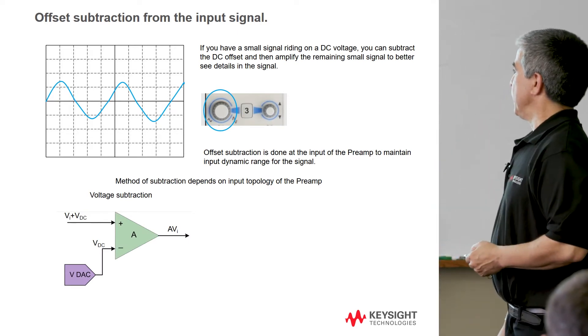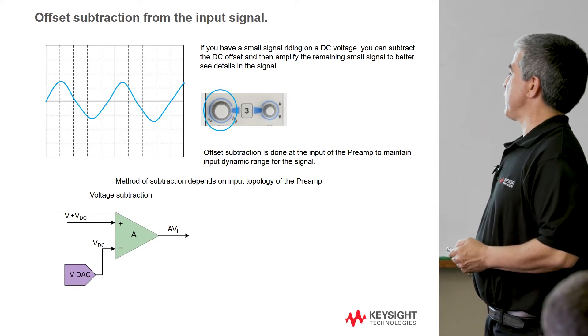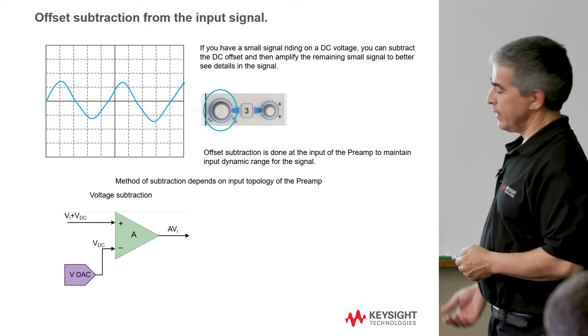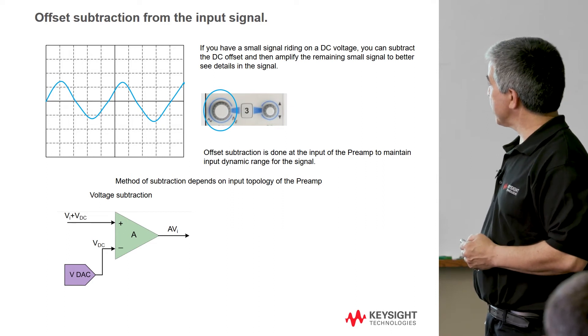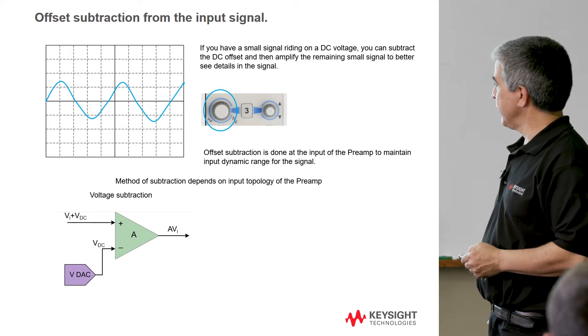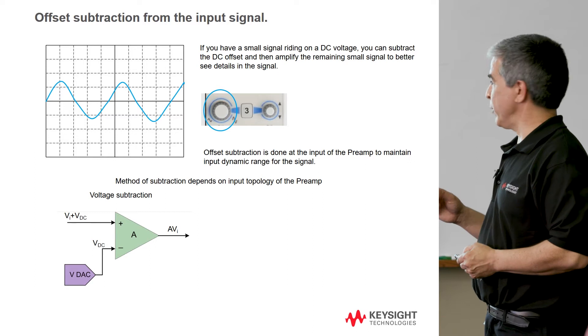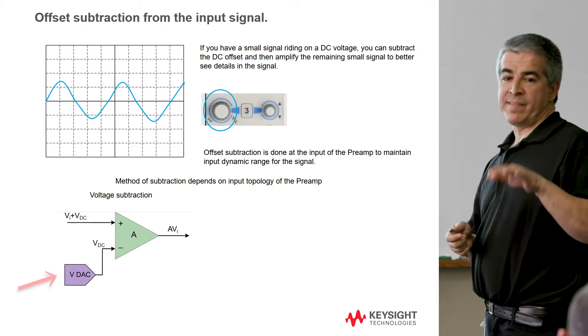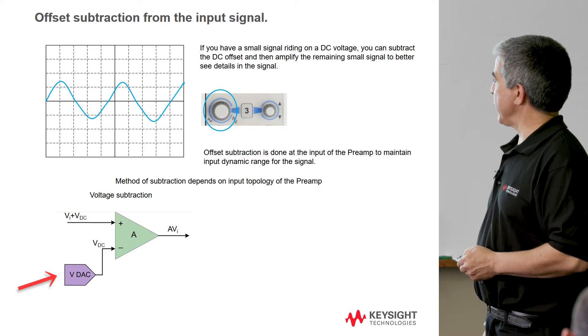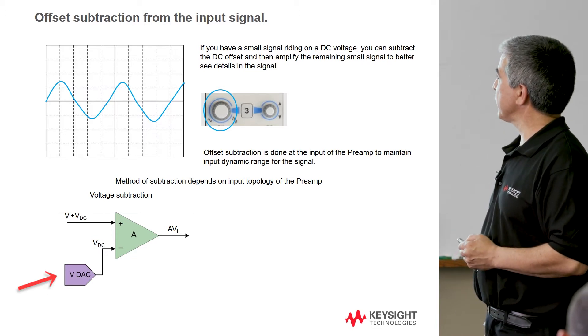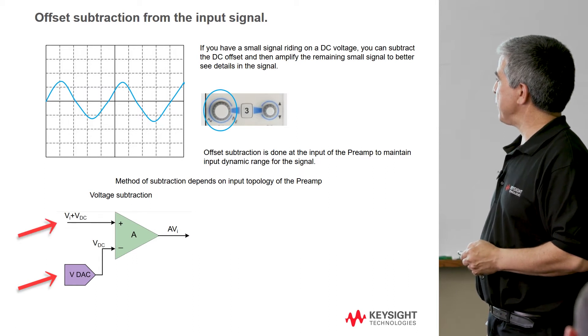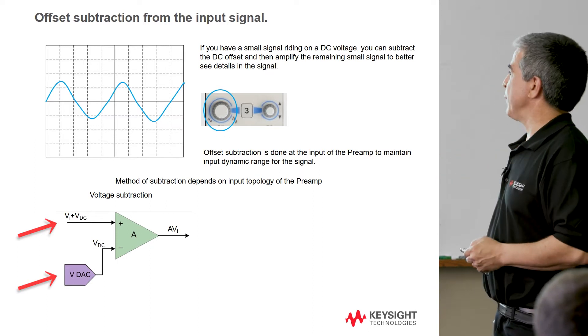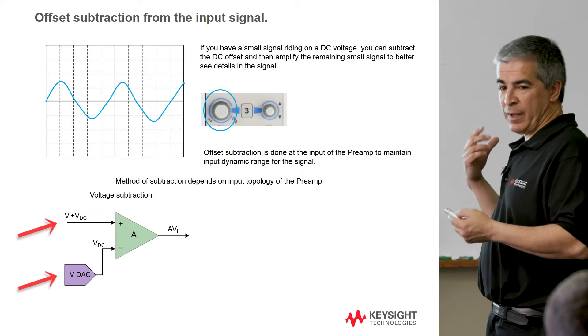So how is that done? Well, if this is that front end stage of the preamp that's basically a differential amplifier, one way to do it is with voltage subtraction. You basically, when you move this or move the little offset knob around, what the system is doing is sensing that and then moving a voltage DAC to a level that you are programming. So for instance, if I have two volts here, I apply two volts to the negative input. So the difference between the DC-wise is zero. So that's considered offset subtraction by using voltage.